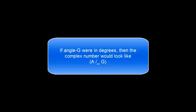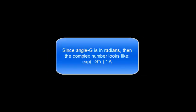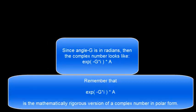Let's review a complex number in polar form. If angle G were in degrees, then the complex number would look like A angle G. Since angle G is in radians, then the complex number looks like e to the negative G times i multiplied by A. Remember that e to the negative G multiplied by i times A is the mathematically rigorous version of a complex number in polar form.